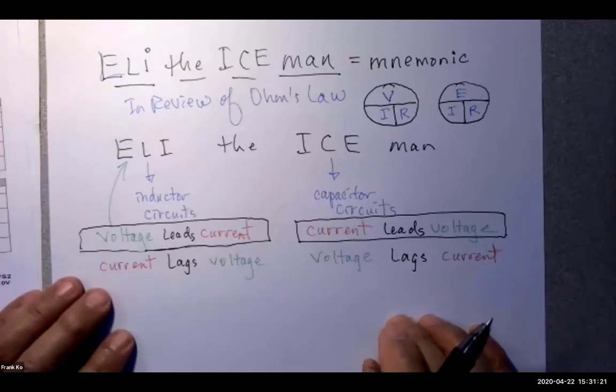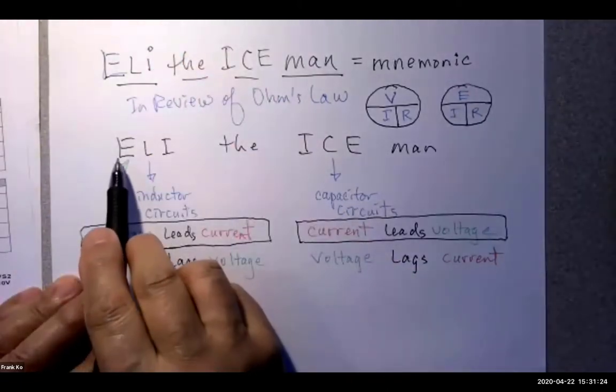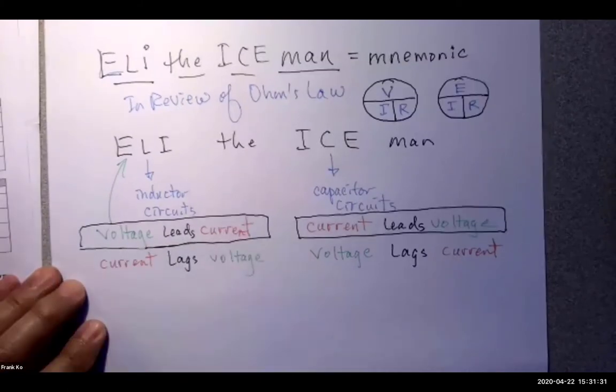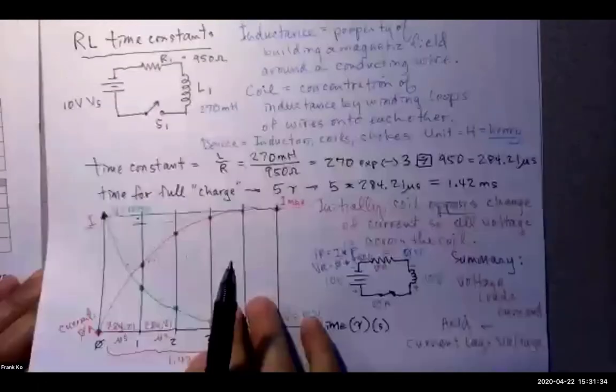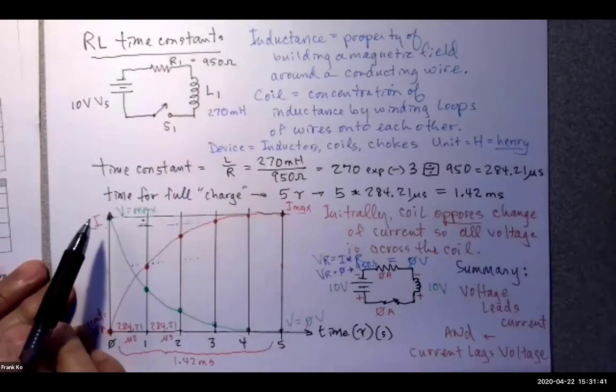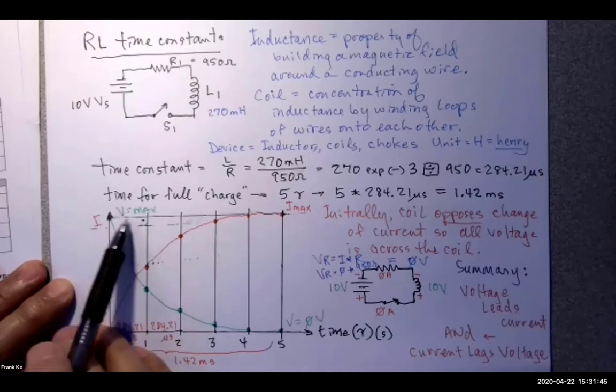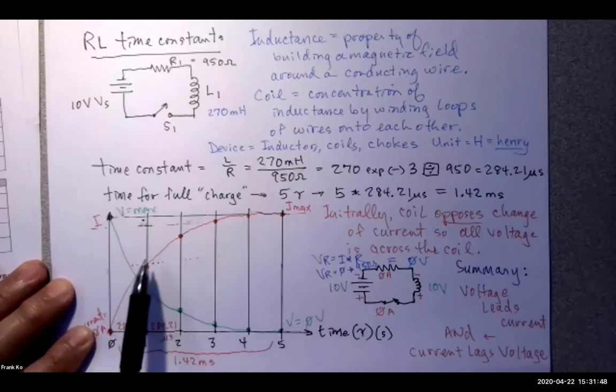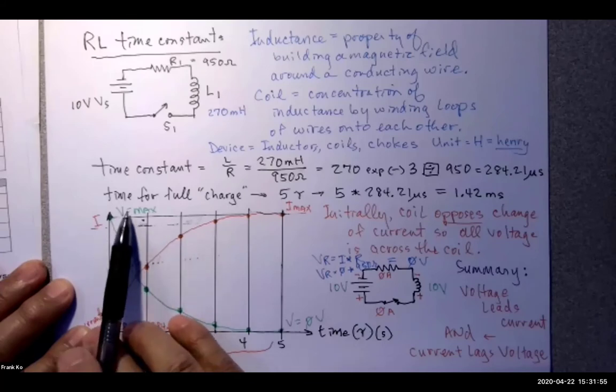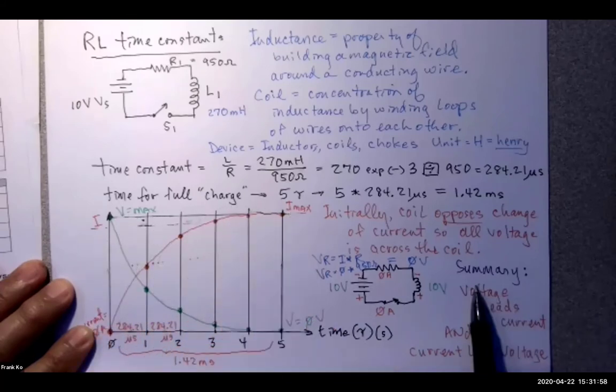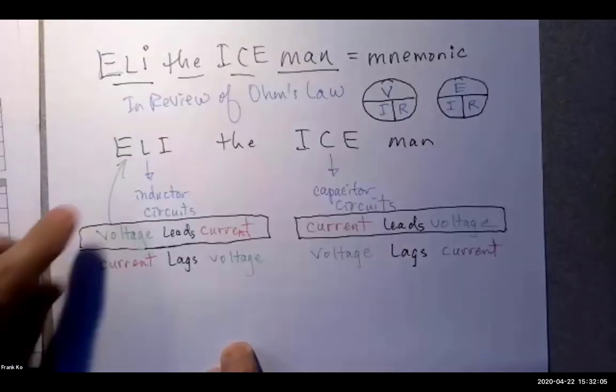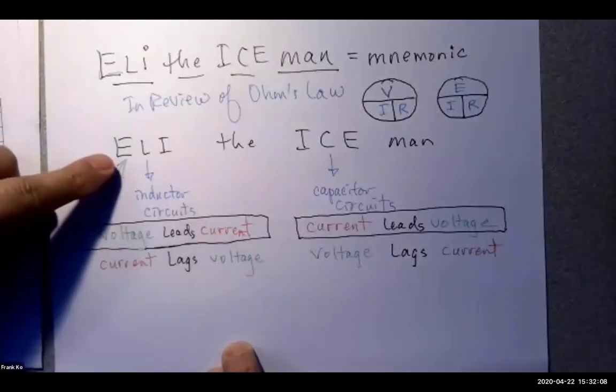If we analyze Eli, Eli says E-L-I, voltage leads current. Voltage is at maximum before current reaches maximum. And in the inductor circuit that we had a few minutes ago, here's the coil, here's the resistor. What quantity was at maximum at zero tau? Voltage was at maximum. And then at the end of five tau, current reaches maximum. So that's what allowed us to make the concluding remark, voltage leads current in an inductor circuit.